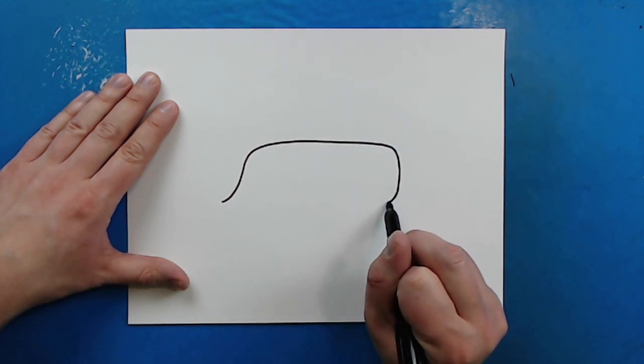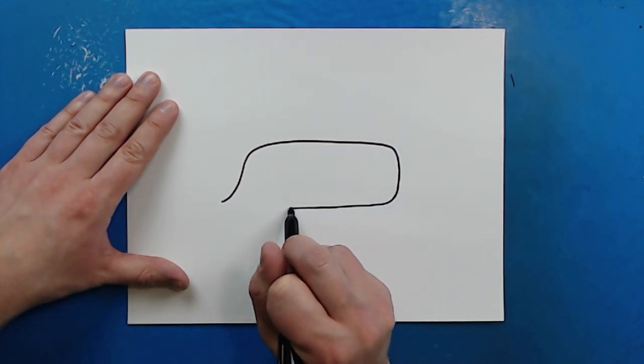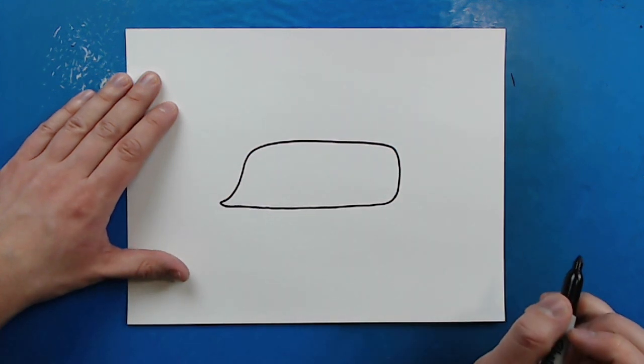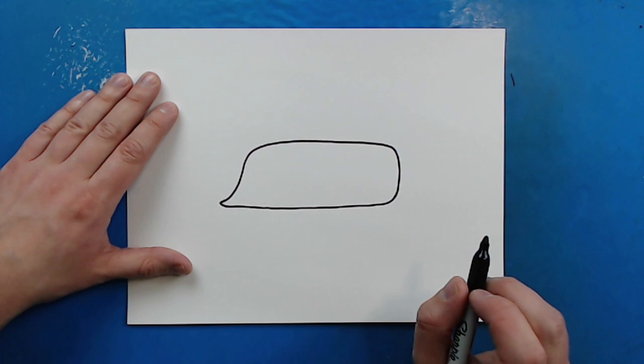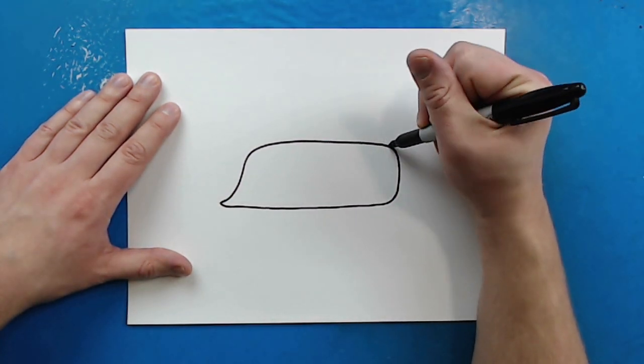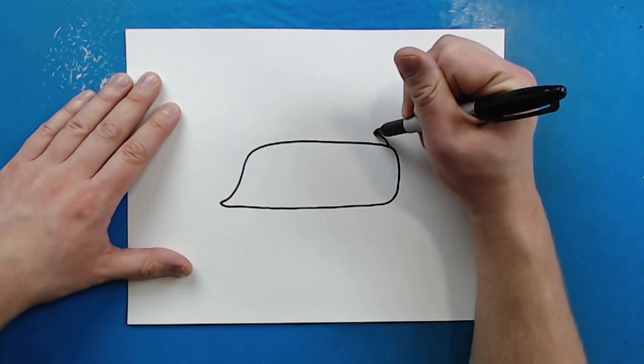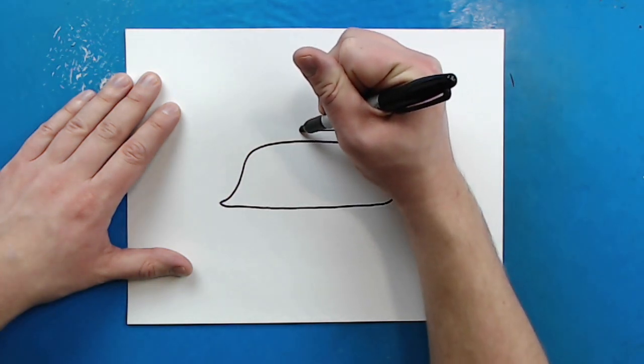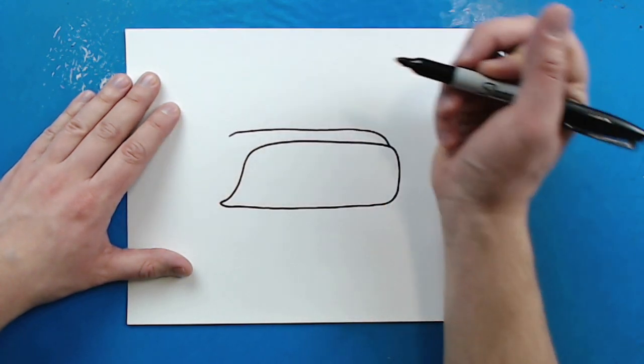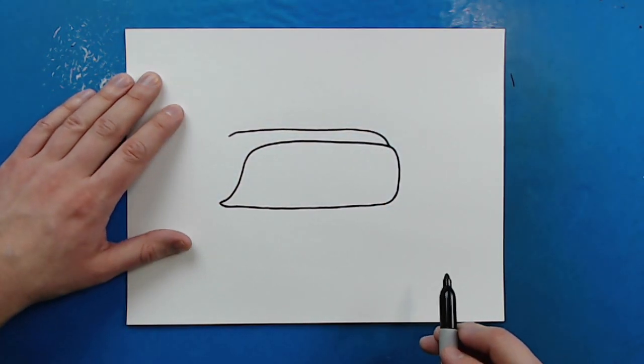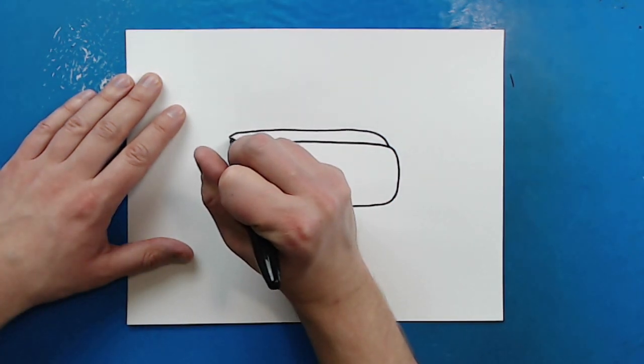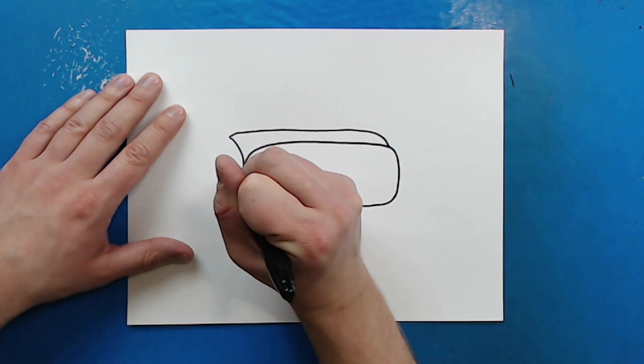Then starting right here, I'm going to draw a line that's going to go straight across and I'm going to connect it right to this line. Then starting up here, I'm going to draw a line that's just going to curve up here and then it's just going to go around here and I'm going to curve it down just a little bit. Then starting here, I'm just going to draw a line that's going to curve into here.